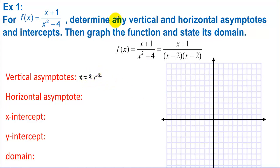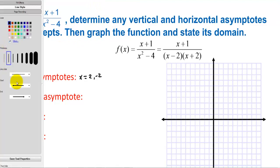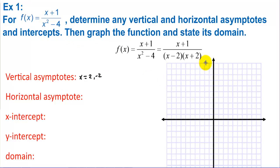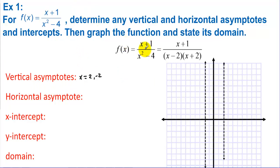We draw those vertical asymptotes with dotted lines at x = -2 and x = 2. For the horizontal asymptote, we compare the degrees of the polynomials — we have little over big, so it's an automatic y = 0, which is the x-axis.